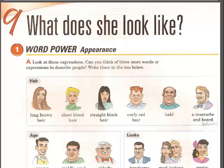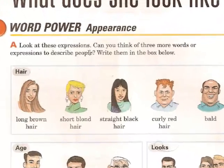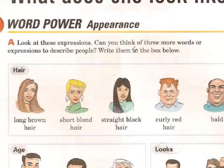Hello, welcome to Unit 9: 'What does she look like?' This is the title of this unit. In number one, Word Power: Appearances. Look at these expressions — can you think of three more words or expressions to describe people? Write them in the box below.